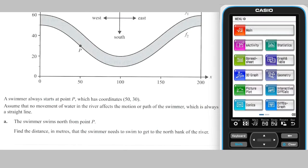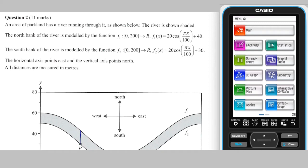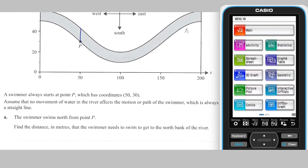Part A. The distance from point P on the southern bank to the point directly north on the northern bank is equal to the difference between the two functions, which, based on their equations, is the difference between 30 and 40, i.e. a distance of 10 metres.